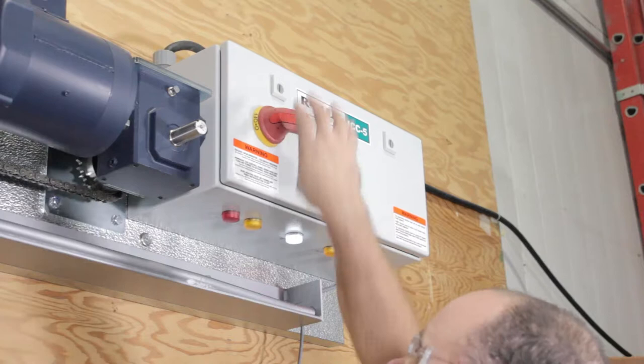then operate the door to reach the closed position and turn off the power to the door controller. Now the door is safe to work on.